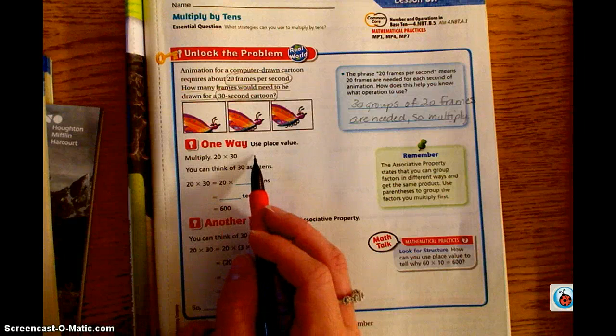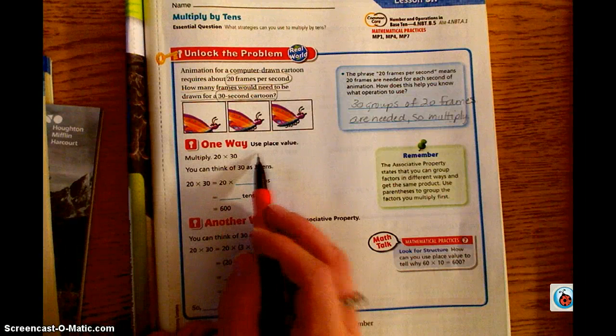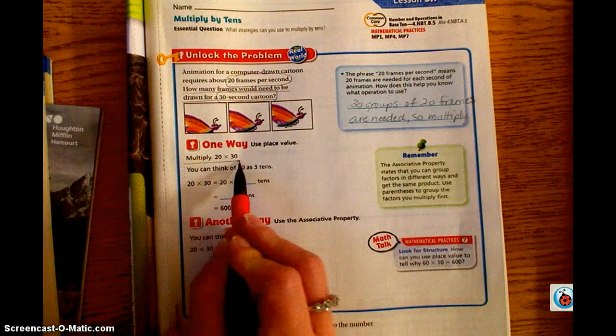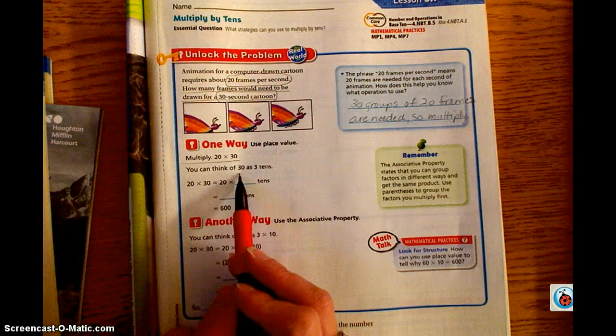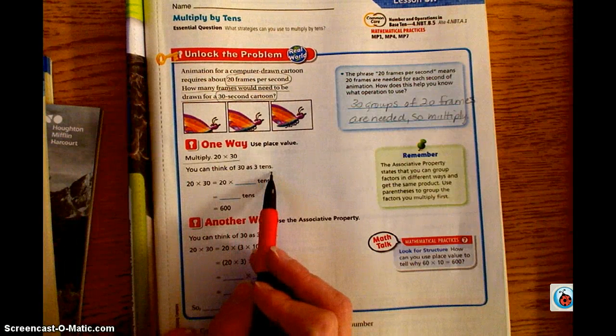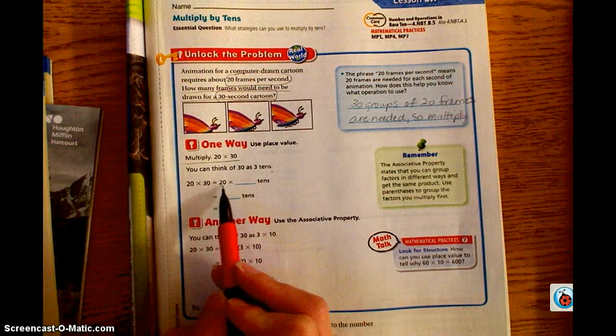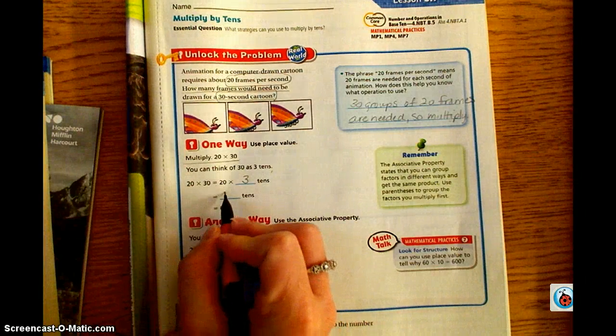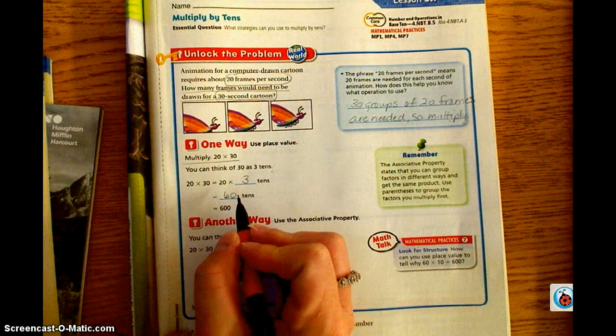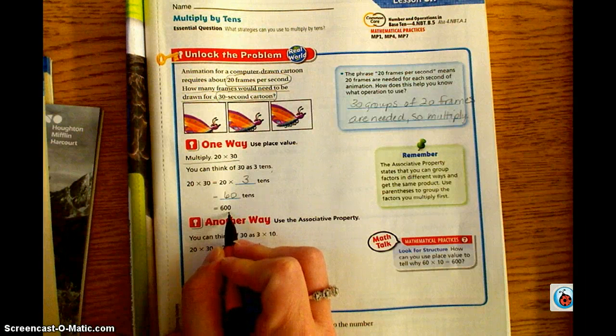One way that we can solve this tens problem is to use place value. The problem as we identified is 20 times 30. You can think of 30 as three tens. So 20 times 30 equals 20 times three tens, which is 60 tens, which is going to translate to 600.